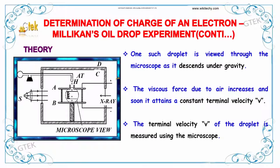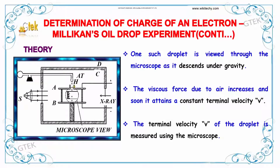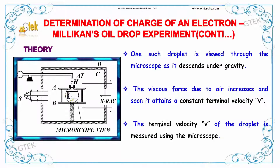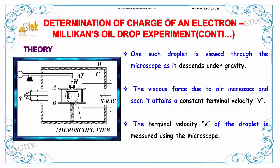One such droplet is viewed through the microscope as it descends under gravity. The viscous force due to air increases and soon it attains a constant terminal velocity V. The terminal velocity V is measured using the microscope.